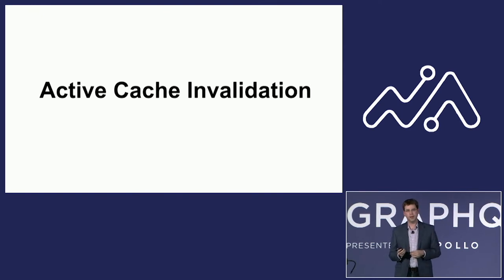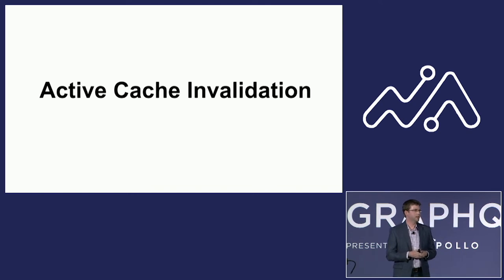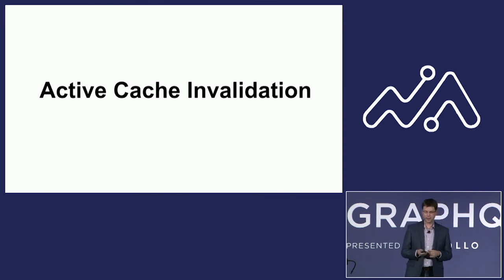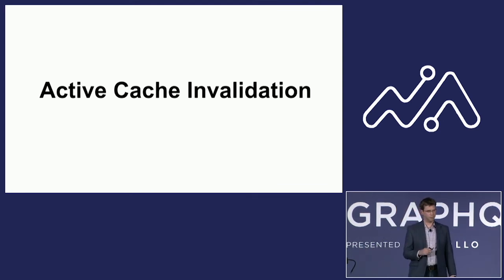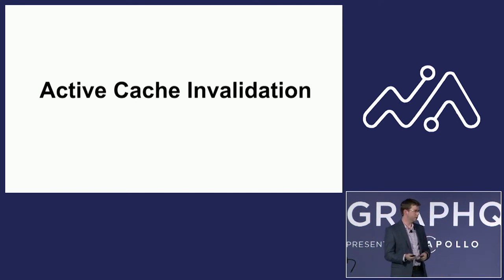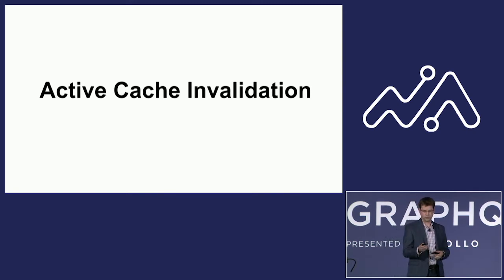For a news business, having the freshest content in your caches is very important. So we've devised a system of active cache invalidation. As we were adopting GraphQL at the New York Times, we were also completely rewriting our publishing stack into a completely event-driven system, and we take advantage of those events to actively invalidate caches throughout the stack.